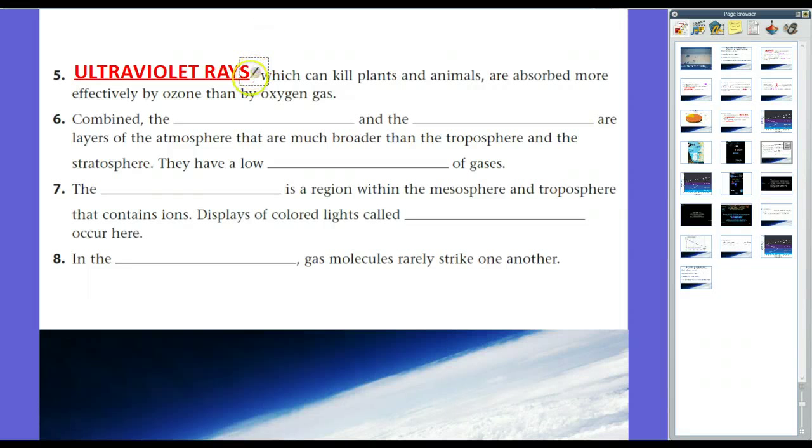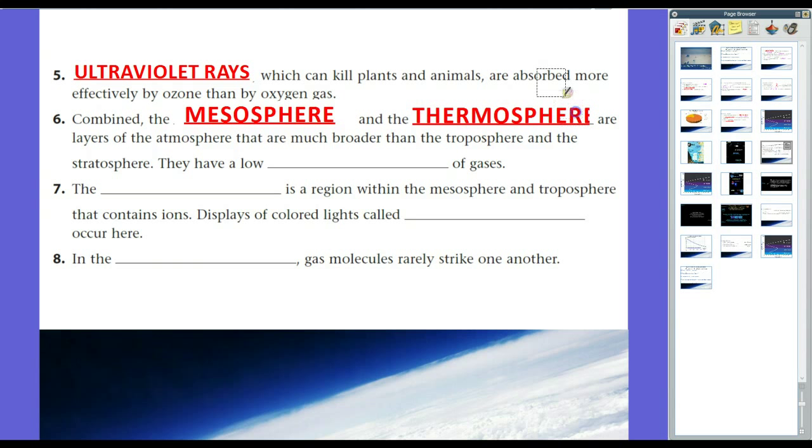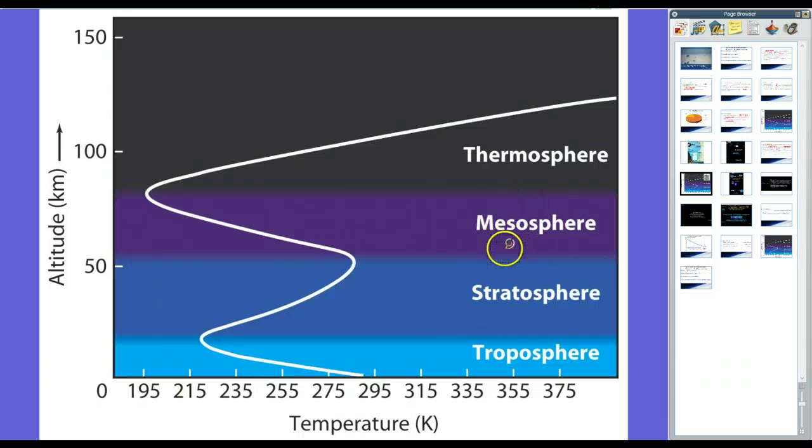Now, combined, we talk about the next two layers kind of interchangeably in some ways. The mesosphere and the thermosphere are the layers of the atmosphere that are much broader than the troposphere and the stratosphere. They have a lower density of gases. In other words, there's less molecules bouncing into each other the higher up you go. So, the higher up you go in altitude, there's pretty much a constant drop in atmospheric density or molecules bouncing around each other.